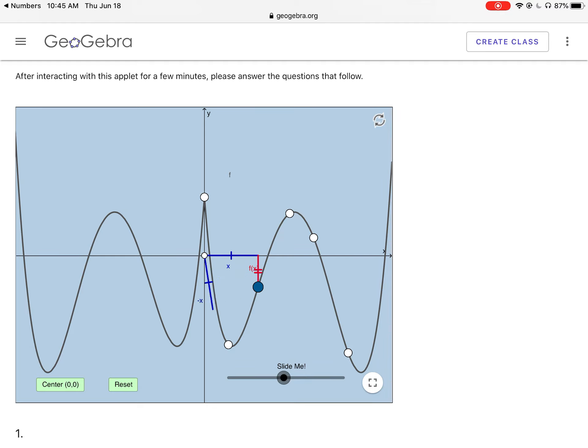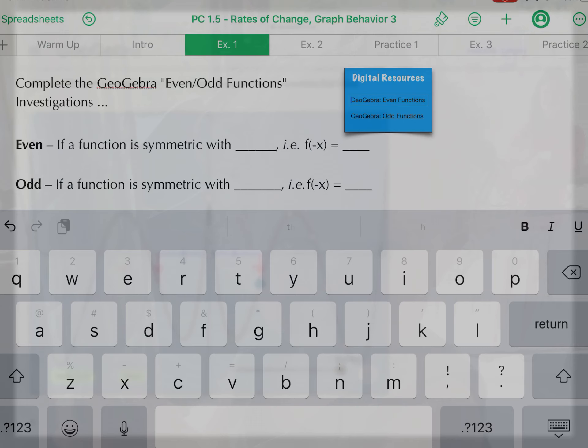If I were to plug the negative of that x value, so just the opposite x value, notice how I'll get the same y value, which is represented by f of negative x this time. So what this is showing is that in an even function, f(x) results in the same thing as f(-x). So let's put that into our notes.